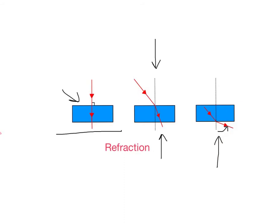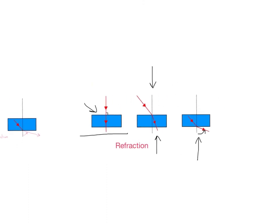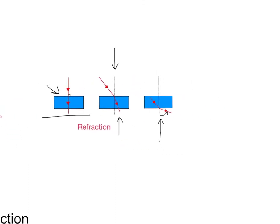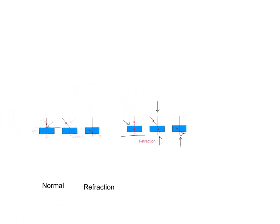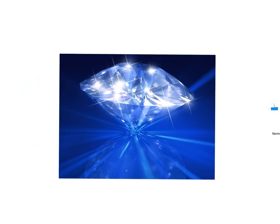Why does this matter? Refraction is a process the lens in your eye uses to focus light in order to allow you to see. Jewellers also use techniques from refraction to cut diamonds, so that the light bends and goes through them, and makes them sparkle like this.